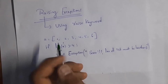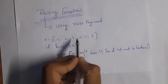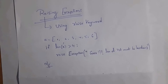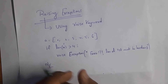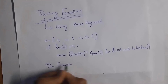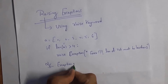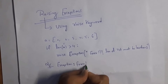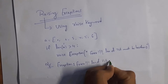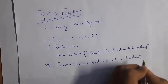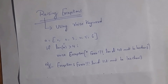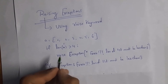The condition says the length of a should not be greater than four, but here the list has six items, so length is six. The condition is met, so it will display the exception: 'error: length of list must be less than three'. This demonstrates the use of the raise keyword to create your own exceptions.